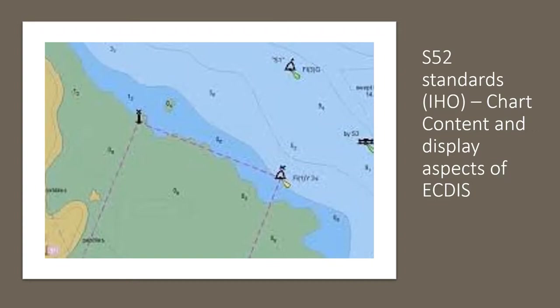There are some more standards like these. They cover the chart — what should be seen and in what color, how the data should be encrypted for transfer, what symbols should be used, and what a raster chart should look like.